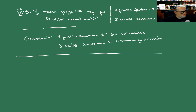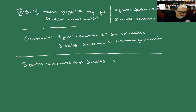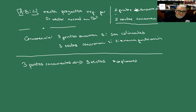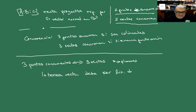¿Cómo sabemos cuándo tres puntos concurren? Tres puntos corresponden con tres rectas que en principio son linealmente independientes. Si son tres puntos que concurren, que están en una misma recta — y recordemos que una recta era un plano — son tres rectas coplanares. Dos rectas siempre son coplanares, dos puntos siempre concurren. Entonces, ¿qué tiene que pasar con la tercera? La tercera recta debe ser linealmente dependiente. Es decir, si tomo los tres puntos — digámosles (A,B,C), (D,E,F), (X,Y,Z) — la tercera debe ser combinación lineal de las otras dos.